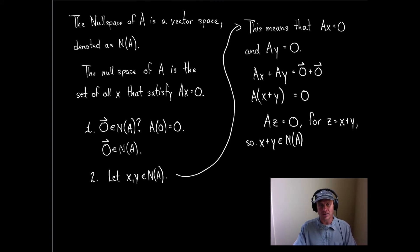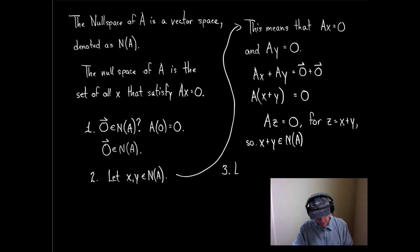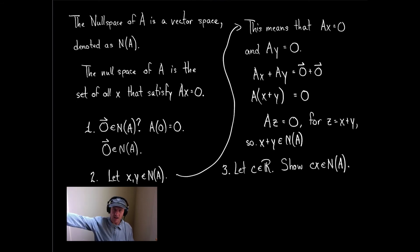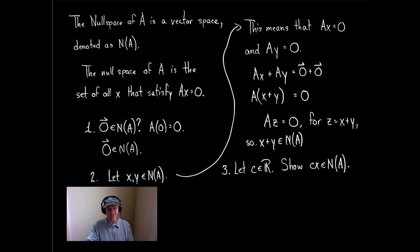So we're doing pretty well. There's one last step to show, and that is the third requirement. Let c be a real number — in other words, c is just a scalar. What I have to show is that cx is in the null space of A. In other words, multiplying by a scalar can't shoot you out of the space.